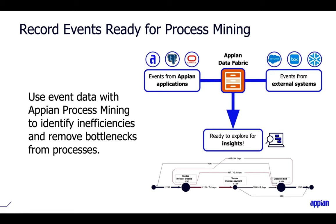Record events allow you to be instantly able to mine your business processes. This event data can be loaded directly into process mining, generating a discovered model and opening analysis opportunities to discover bottlenecks and inefficiencies. You can also leverage event information stored in other systems using Data Fabric, giving you an end-to-end view of your business process. We believe you should use this feature in every application that matters to your business, as it lays the foundation for many exciting capabilities on our roadmap.